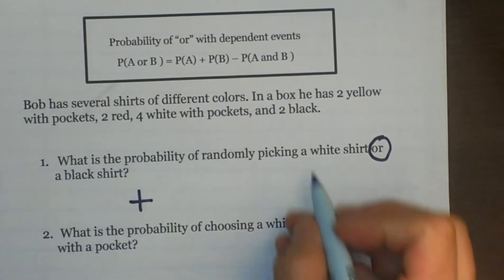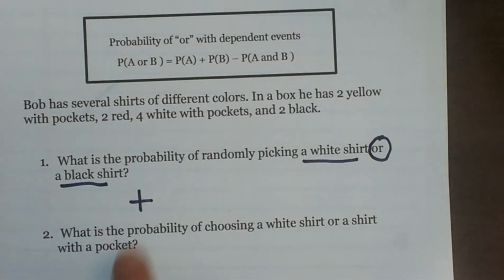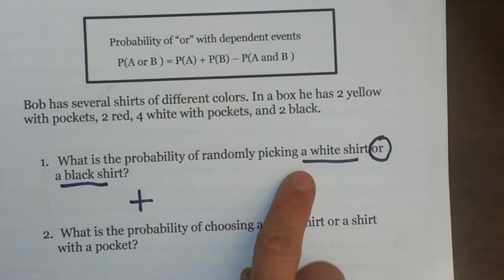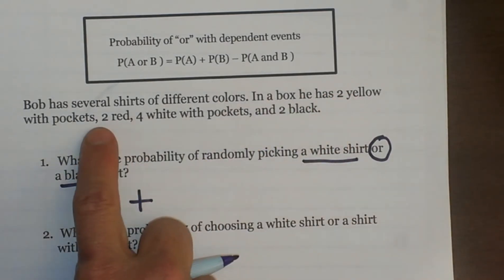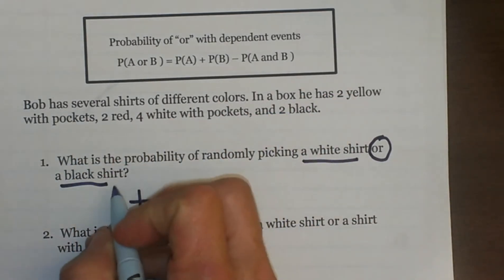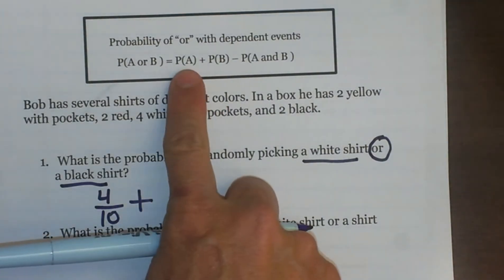So let's find the probability of picking the white shirt and then picking the black shirt. Picking a white shirt, well the probability of white, let's see I have four white out of how many? Well, two, four, six, seven, eight, nine, ten. So I have four out of ten that are white, so that is the probability of event A happening.